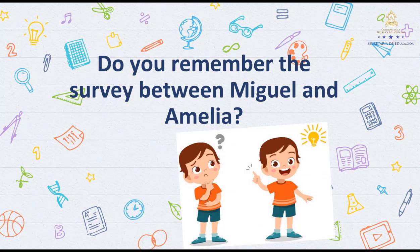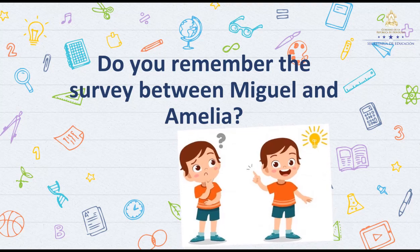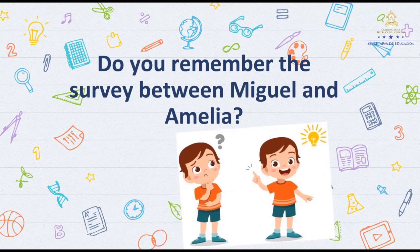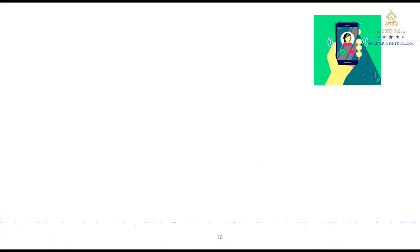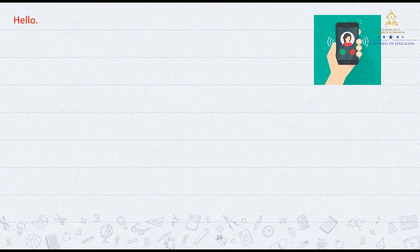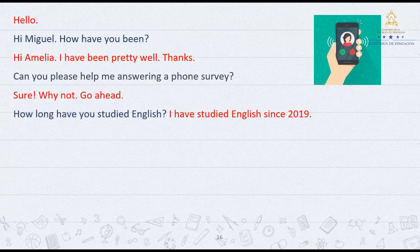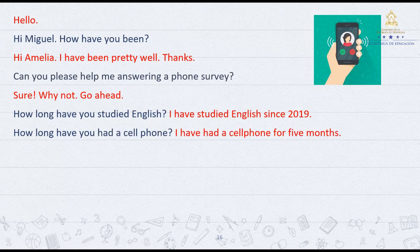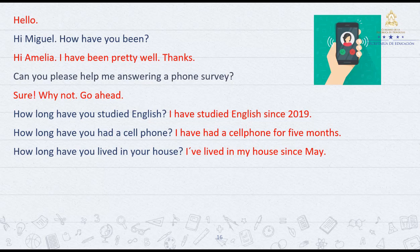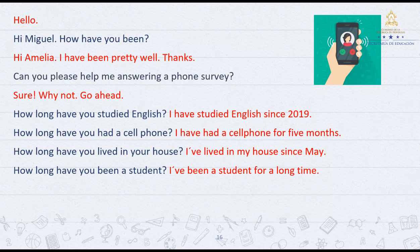Do you remember the survey between Miguel and Amelia? Let's observe the expressions Miguel used in his answers. How long have you studied English? I've studied English since 2019. How long have you had a cell phone? I have had a cell phone for five months. How long have you lived in your house? I've lived in my house since May. How long have you been a student? I've been a student for a long time.